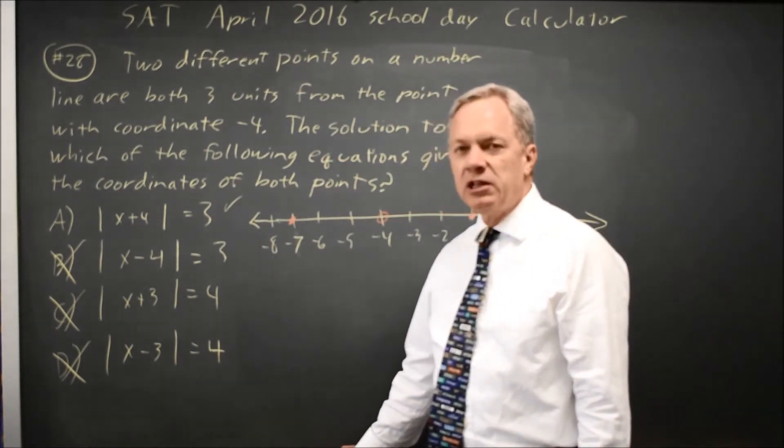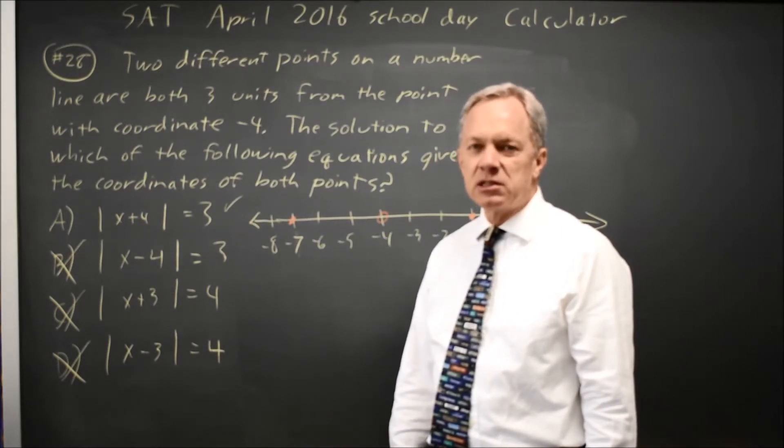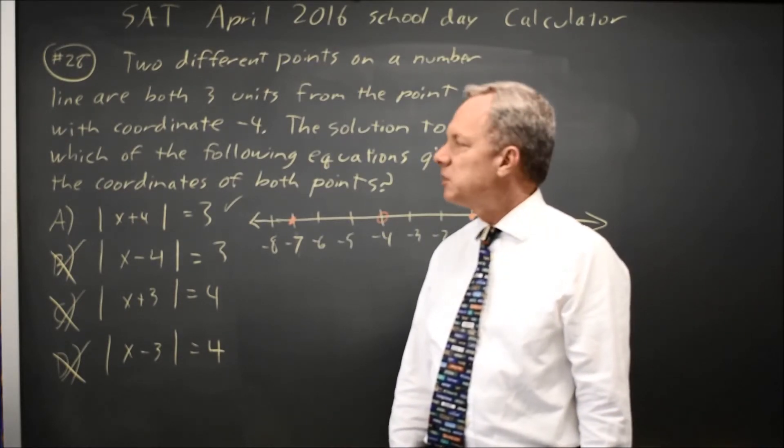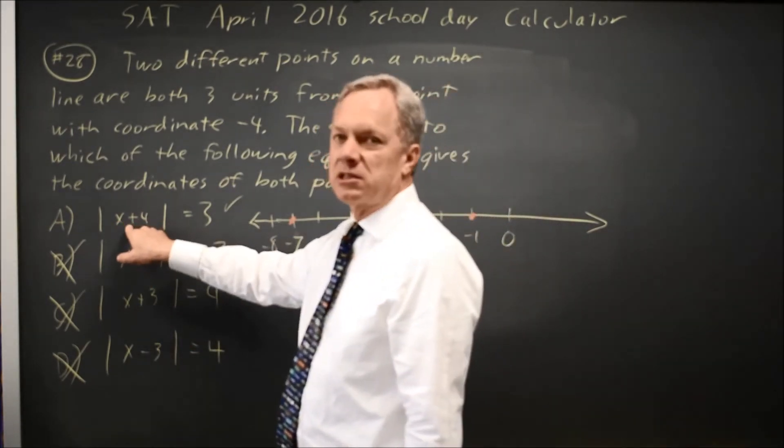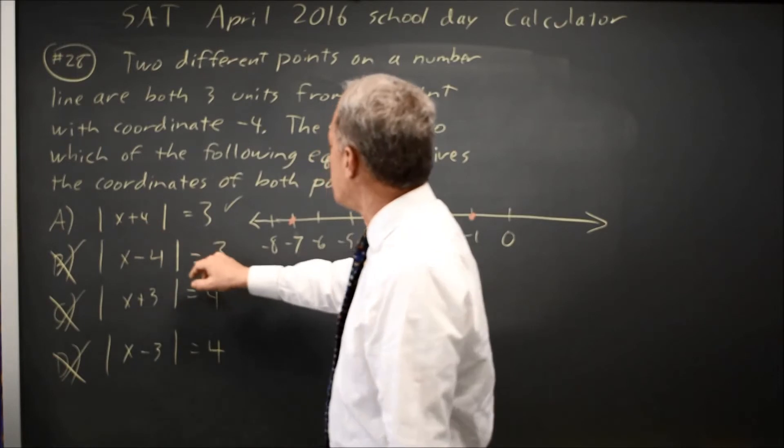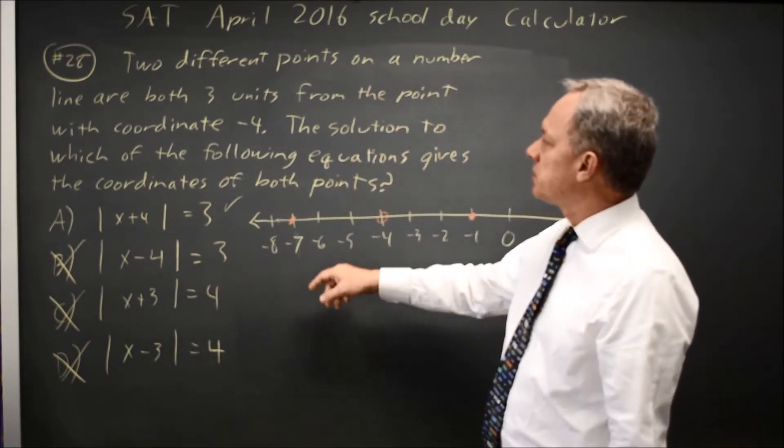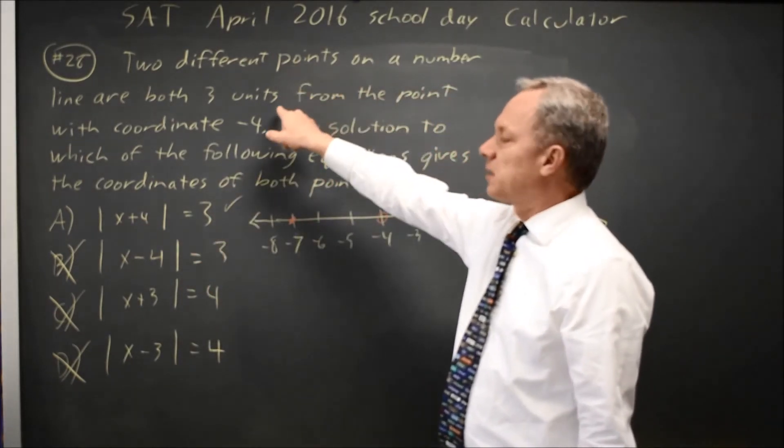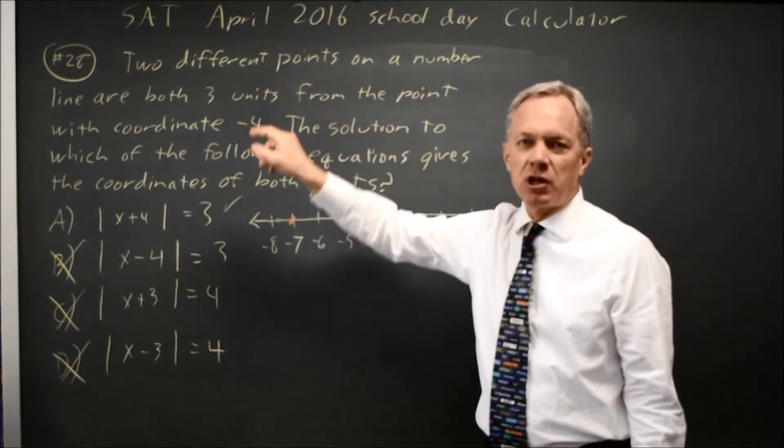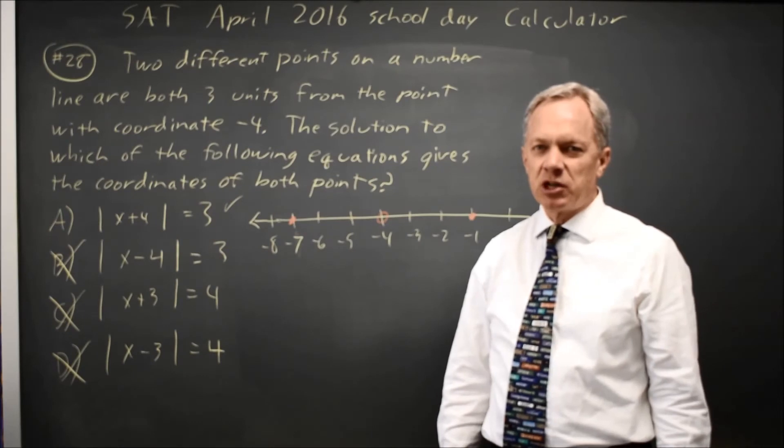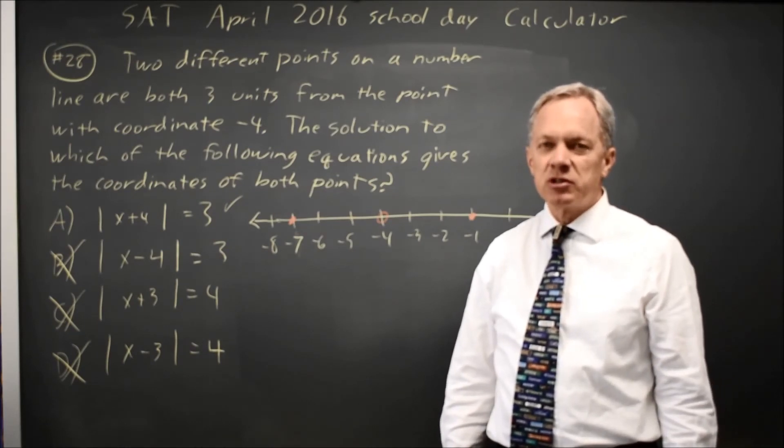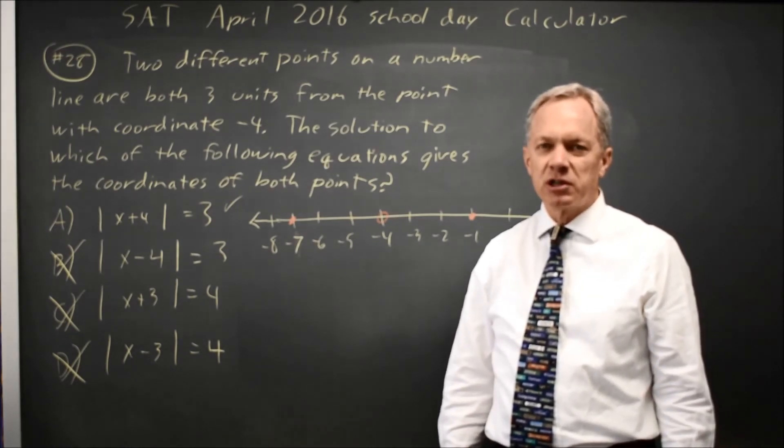Alternatively, absolute value means the distance from 0, or if you shift it left 4, the distance from negative 4. And the two points with a distance of 3 from negative 4 is exactly what are described by this word problem. But I prefer to just draw the number line and find the points from the word problem and then check that they work in the equations.